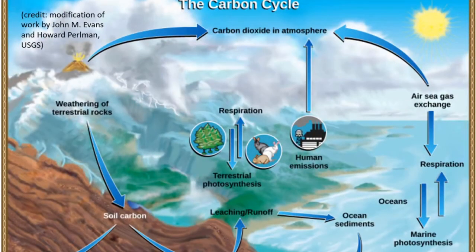Carbon dioxide gas exists in the atmosphere and is dissolved in water. Photosynthesis converts carbon dioxide gas to organic carbon, and respiration cycles the organic carbon back into carbon dioxide gas. Long-term storage of organic carbon occurs when matter from living organisms is buried deep underground and becomes fossilized. Volcanic activity and, more recently, human emissions bring this stored carbon back into the carbon cycle.